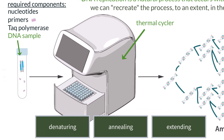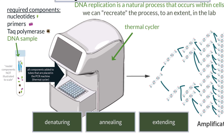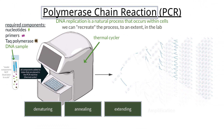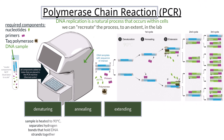The DNA strand, primers, free-floating nucleotides, and an enzyme called Taq polymerase are added to the thermal cycler, which is the PCR machine. During the denaturation phase, the sample is heated up to around 90 degrees Celsius, which will separate the hydrogen bonds that hold the two backbones of the DNA strand together.